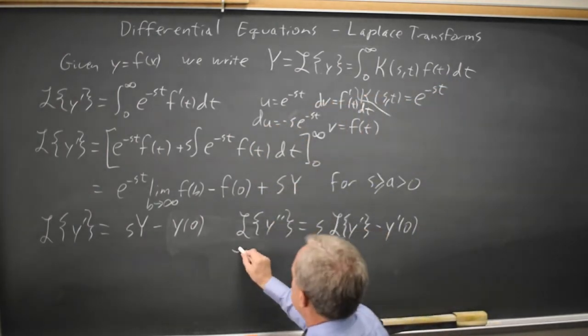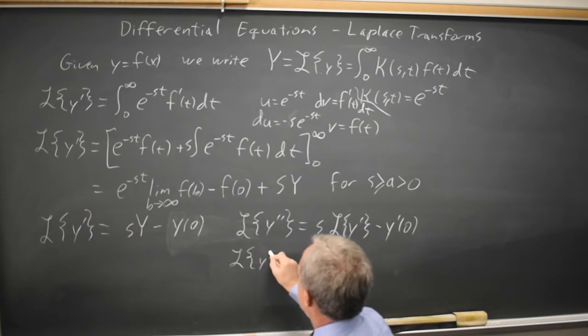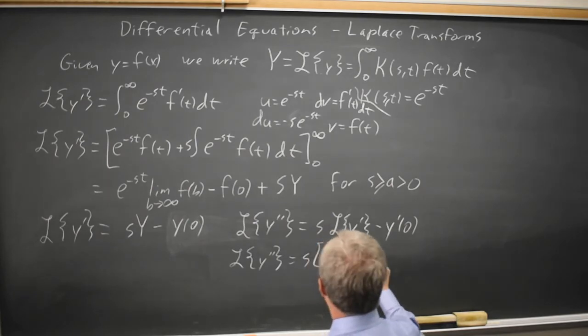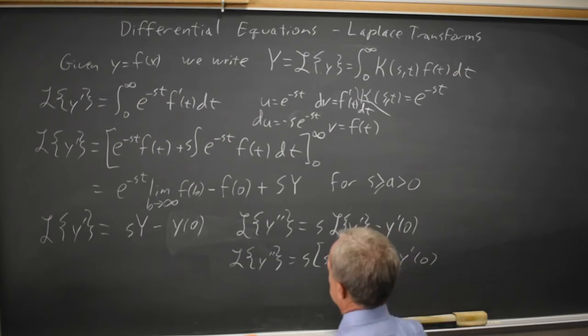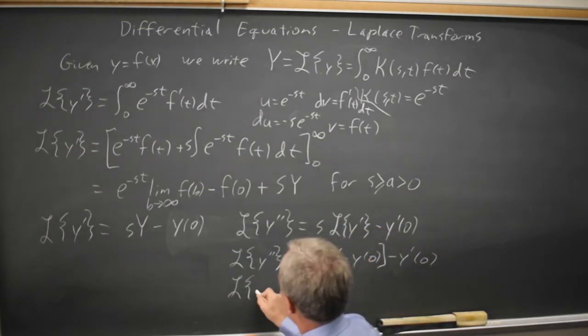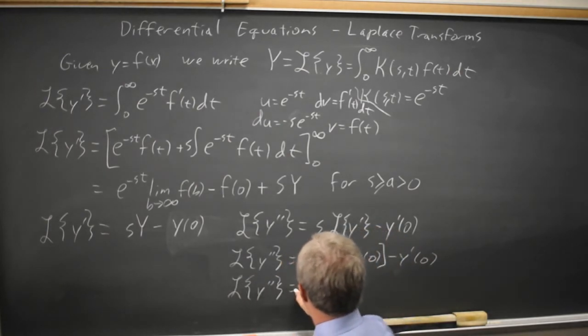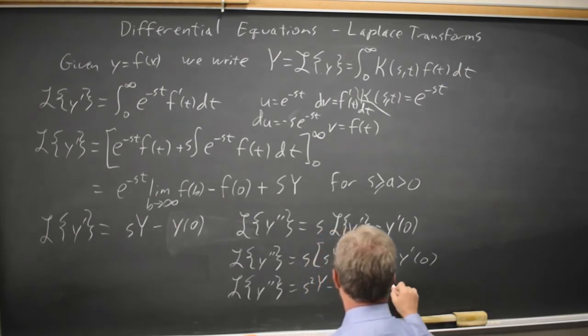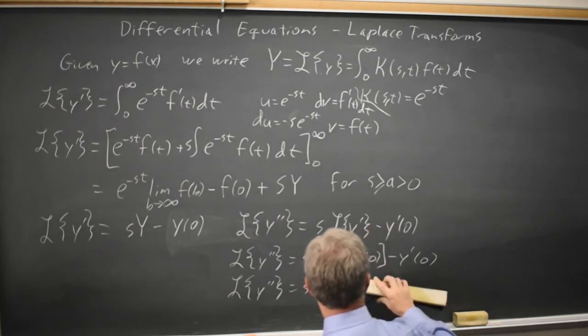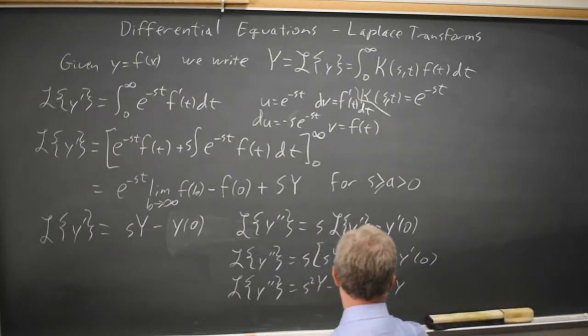But that equals s times s Y minus y of 0, minus y prime of 0. So the transform of y double prime is s squared uppercase Y minus s y of 0 minus y prime of 0.